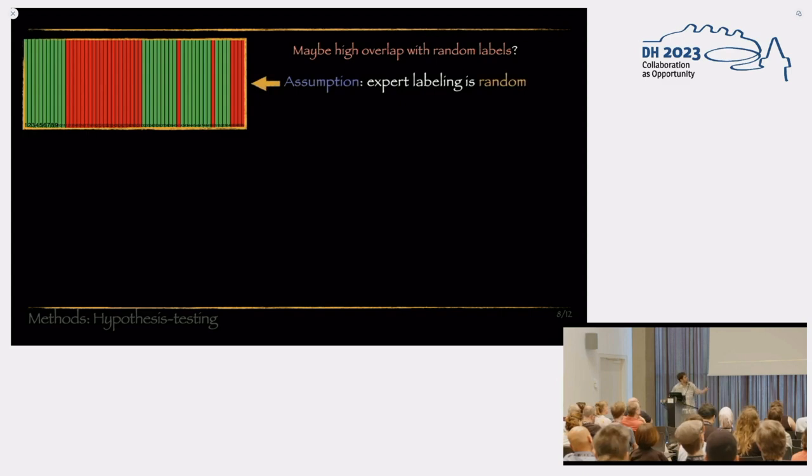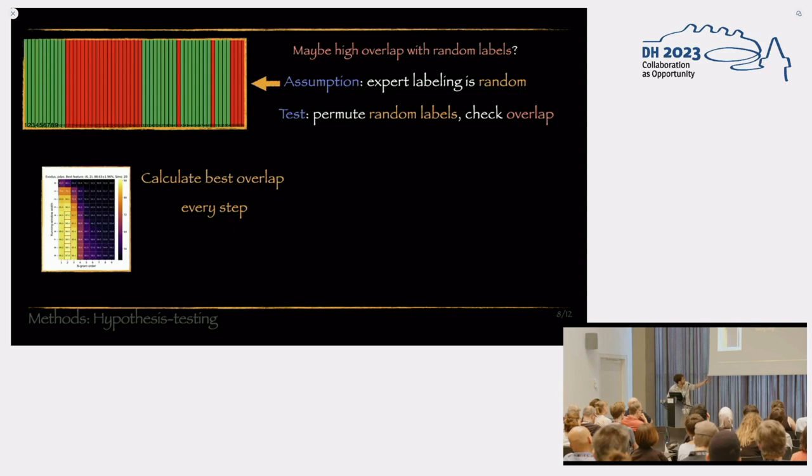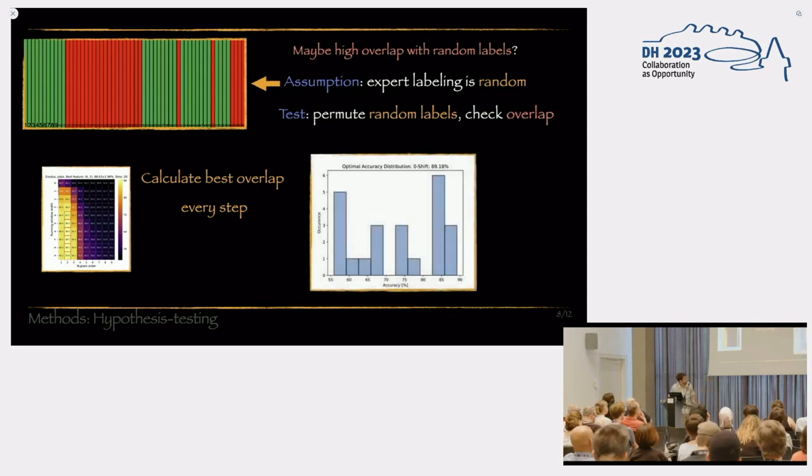The assumption is that the expert labeling, the labels of the biblical scholars, is random. It doesn't represent anything real. And the test to prove what is the probability of this to be so is a permutation of labels. Essentially, we just mess up with these red and green labels and do this entire experiment over and over again. We get this matrix, we take the best value of this matrix, and we generate our null distribution out of this.